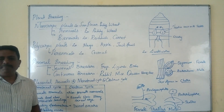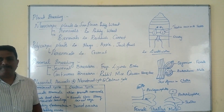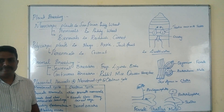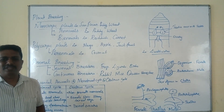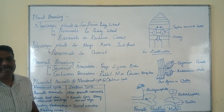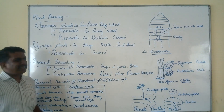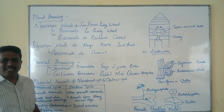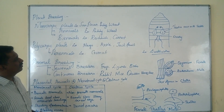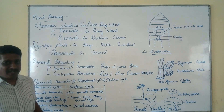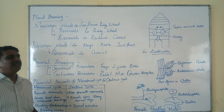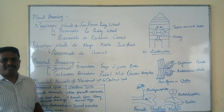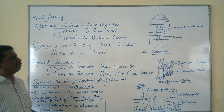In some plants, flowers are produced once in their lifetime. Such plants are called monocarpic plants. Some of the classical examples for monocarpic plants are sunflower, rice or paddy, and wheat.